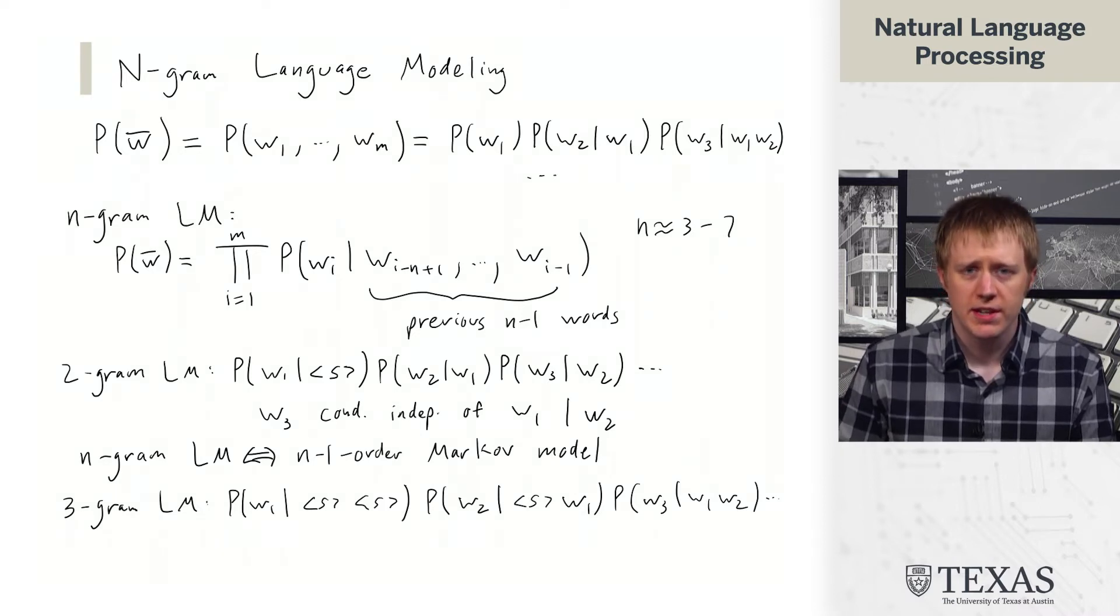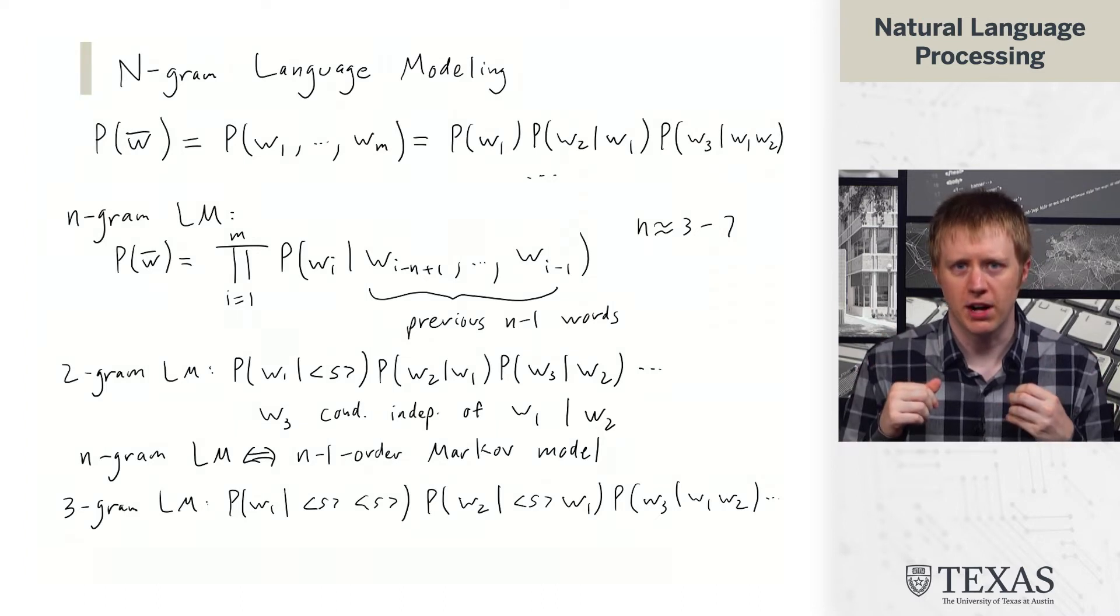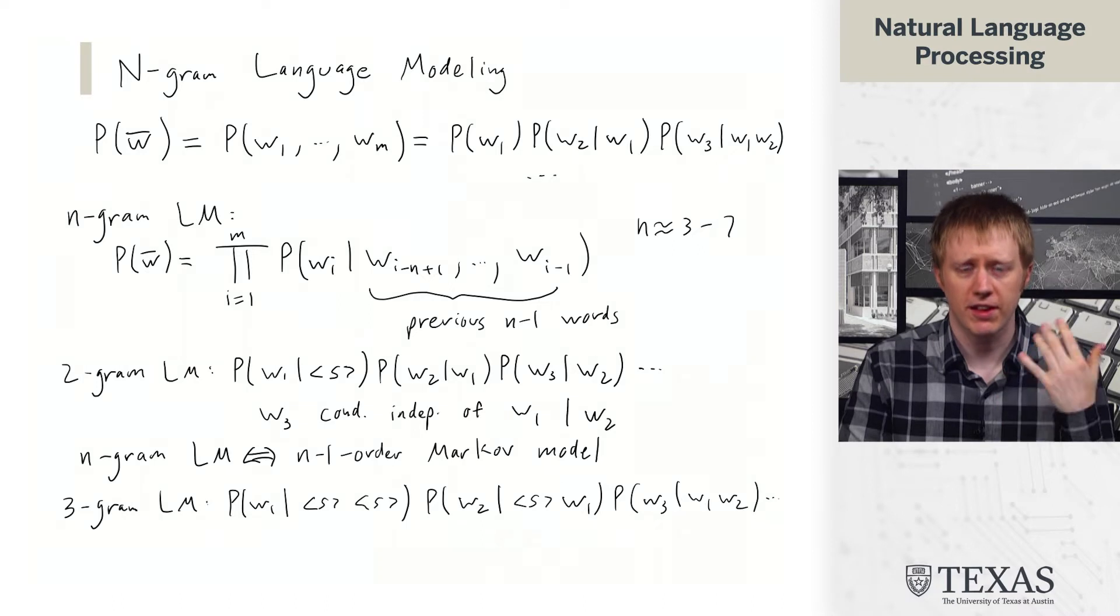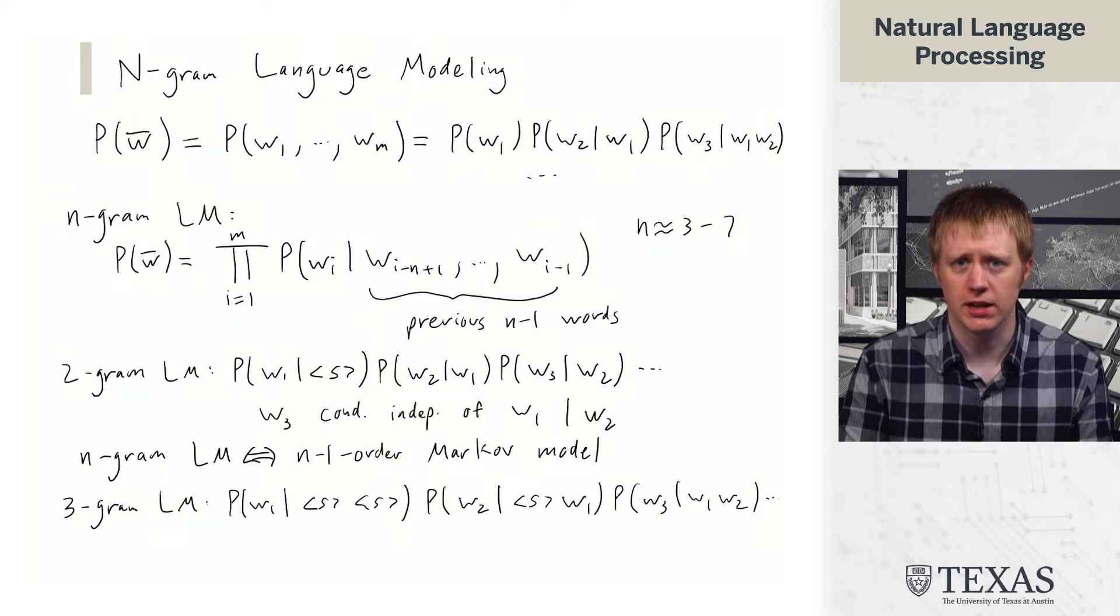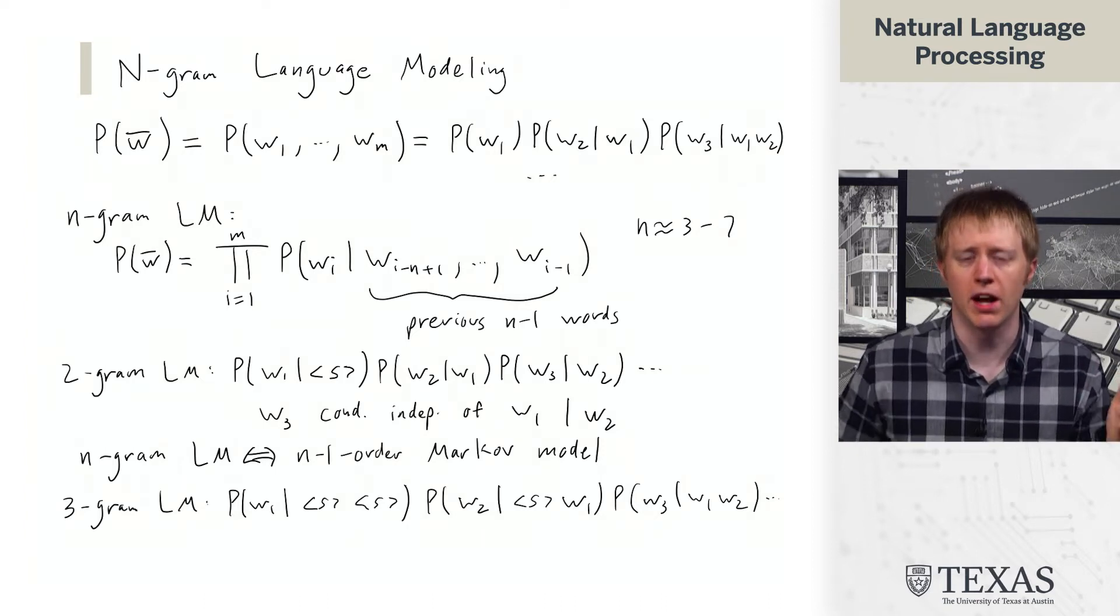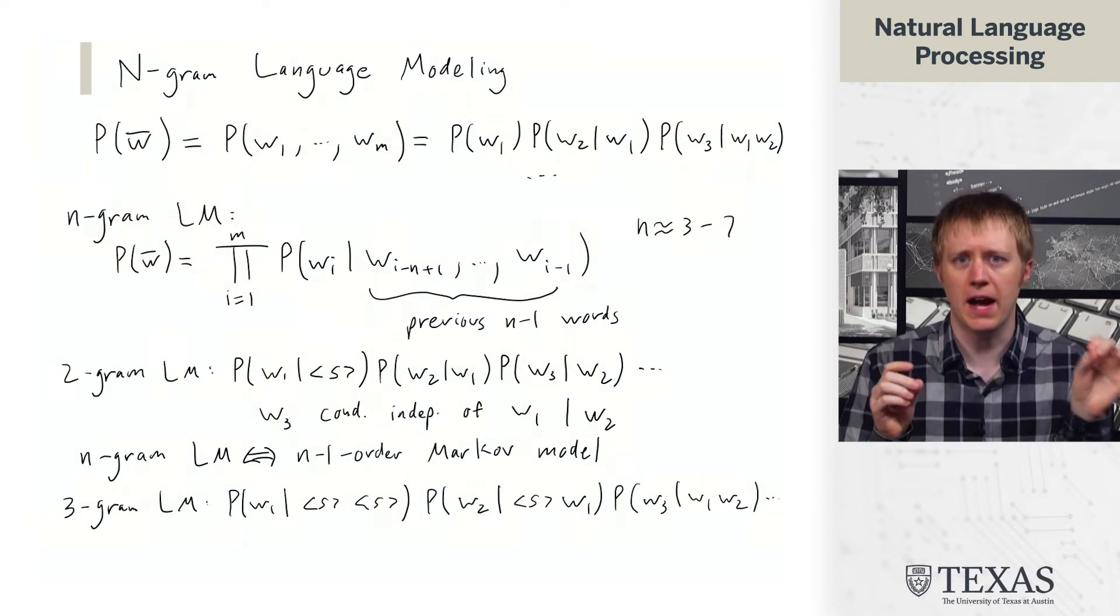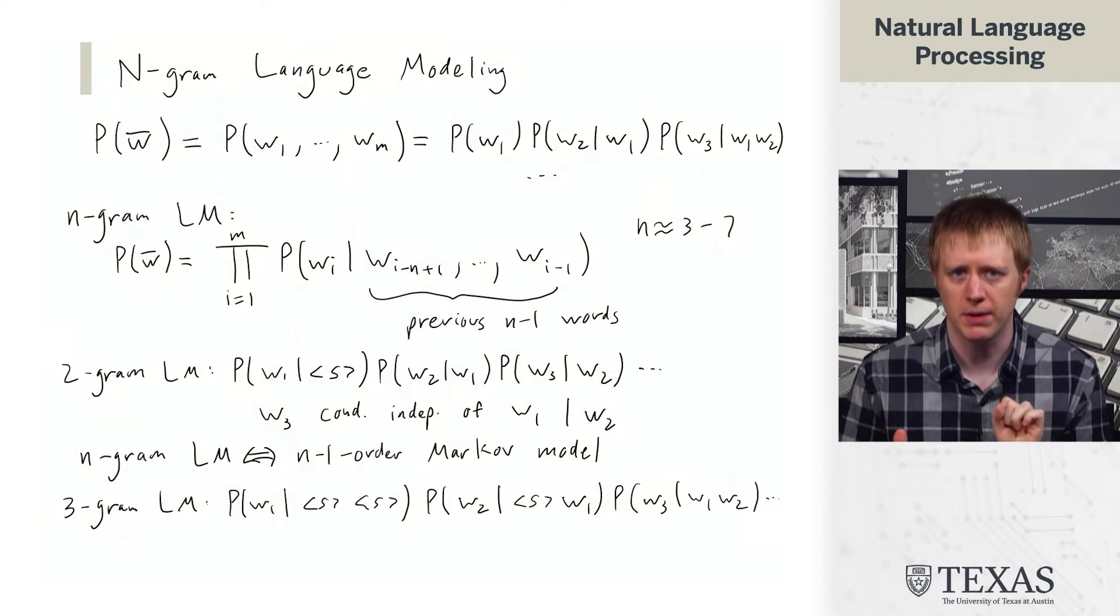So what we see here is that we've dramatically simplified the amount of context that each word looks at. And so we're going to think about whether statistically this is a good assumption or not. From a modeling perspective, it throws out a lot of context that we might otherwise find useful. We're going to look at some cases later where being able to look back many words is probably important for knowing what words about to come next.